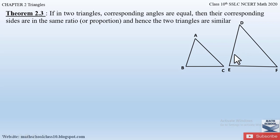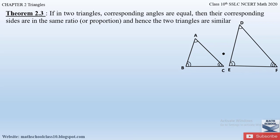Consider two triangles ABC and DEF. In the theorem statement, the corresponding angles are given as equal: angle A = angle D, angle B = angle E, and angle C = angle F. We have to prove that the corresponding sides are in proportion — AB/DE = BC/EF = AC/DF — and hence the two triangles are similar.